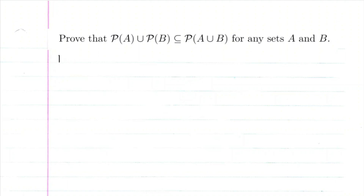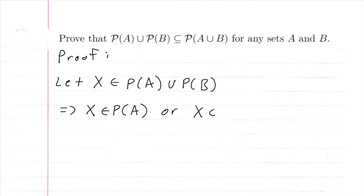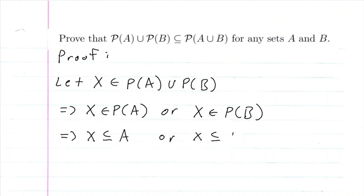So let's go ahead and start the proof. We're going to let the set X be an element of the power set of A union the power set of B. What this means — since we have union, by definition of union — we're going to have X be an element of the power set of A, or X be an element of the power set of B. And then by definition of power set, we know this means that X is a subset of A or X is a subset of B.